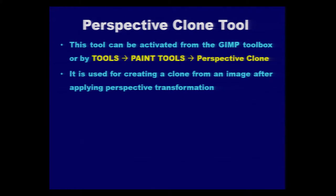In addition to the clone tool, we also have the perspective clone tool available. This tool varies a little from the simple clone tool. It can be activated either from the GIMP toolbox or from the tools menu. It is used for creating a clone from an image after applying the perspective transformation.